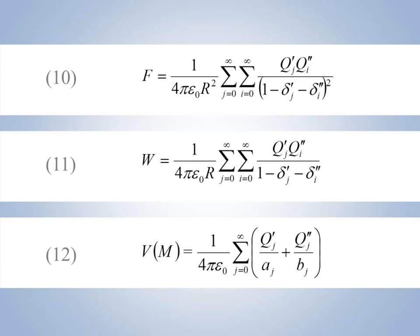In these formulas, Δj prime and Δj second are, respectively, the distances dj prime and dj second to the centers of the spheres divided by the distance R between the spheres.